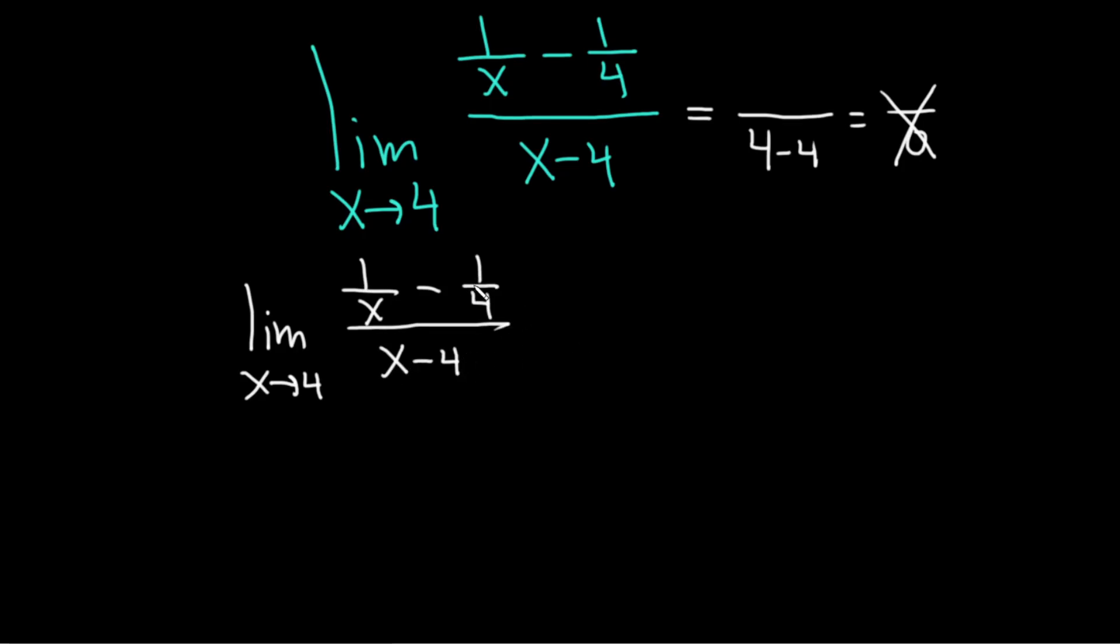So to clear the fractions in the numerator we basically have to get rid of the 4 and to get rid of the x. To get rid of the 4 we can multiply by 4, so I'll put a 4 here. And then to get rid of the x we have to multiply by x, so I'll put an x here.